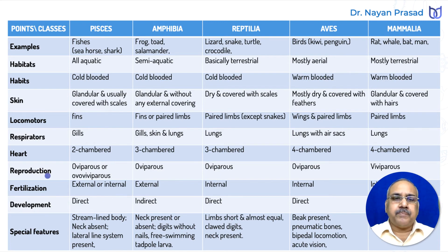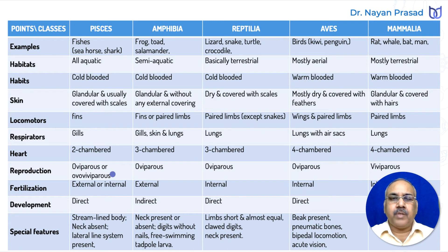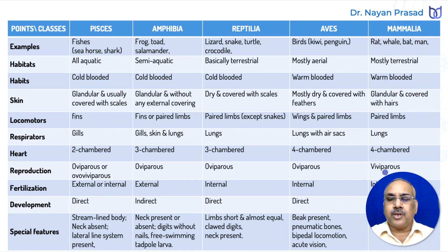Regarding reproduction: fishes may be oviparous or ovoviviparous. Most fishes such as seahorse are oviparous, laying eggs, but sharks are ovoviviparous. Amphibians, reptiles, and birds are all oviparous. Mammals are viviparous, giving birth to young ones.